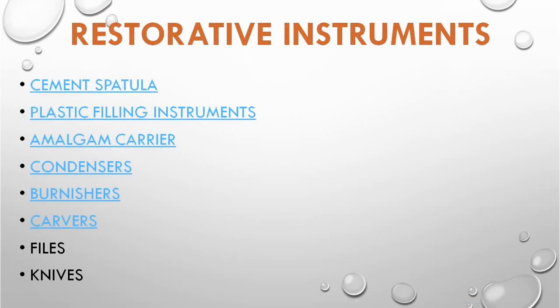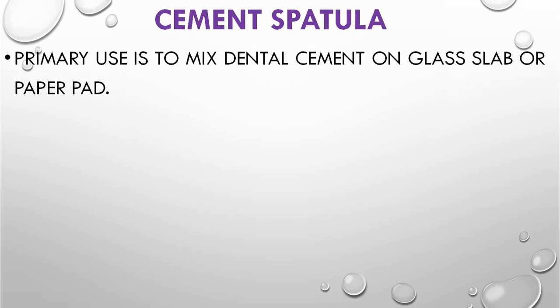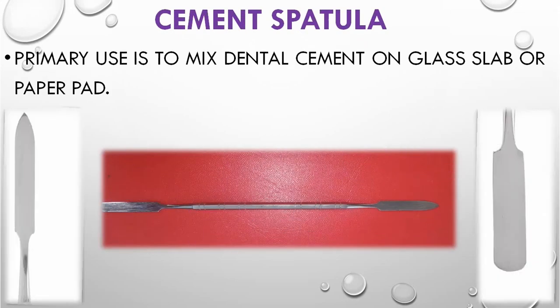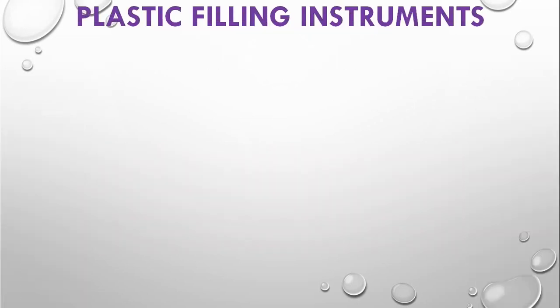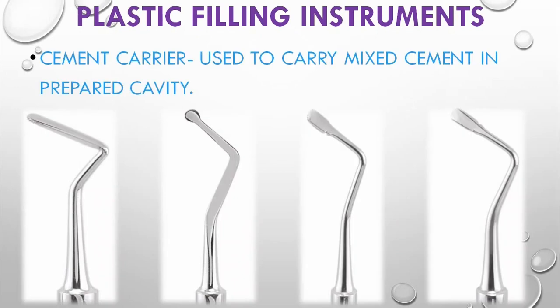Restorative instruments are used for placement of restorative material. Spatulas are primarily used to mix dental cements on a glass slab or paper pad and have a blunt or pointed edge. Stainless steel spatulas are used for mixing zinc phosphate and zinc polycarboxylate cement, while plastic spatulas are used to mix glass ionomer cement. Plastic filling instruments, also called cement carriers, are primarily used to carry mixed cement into the prepared cavity.